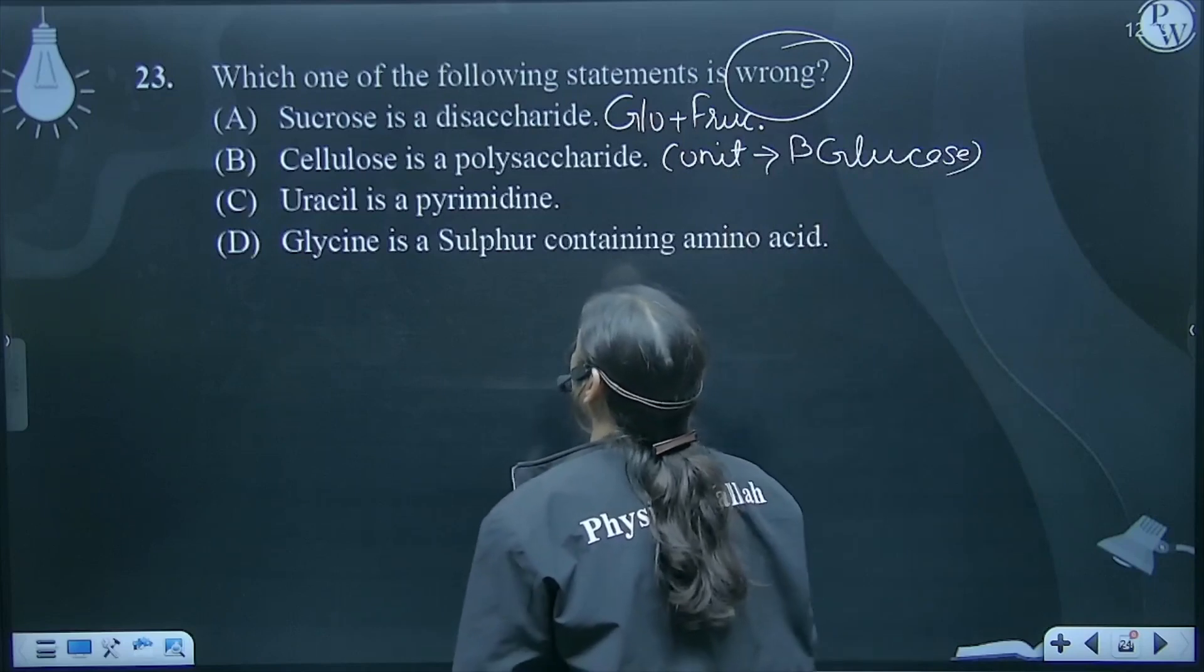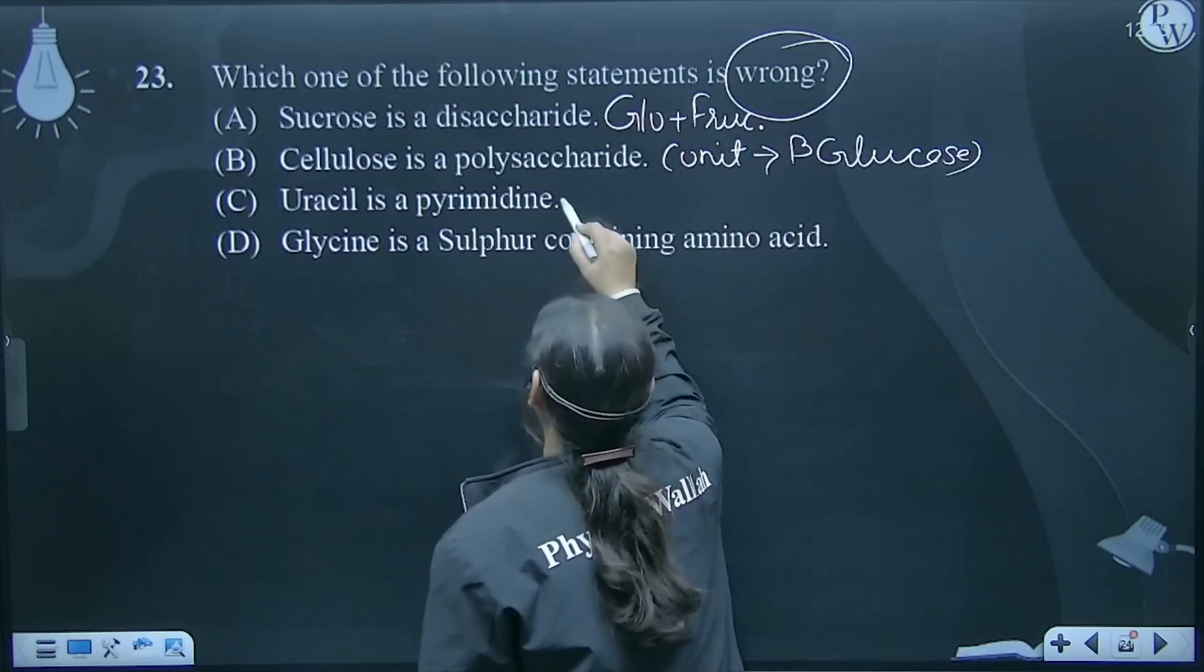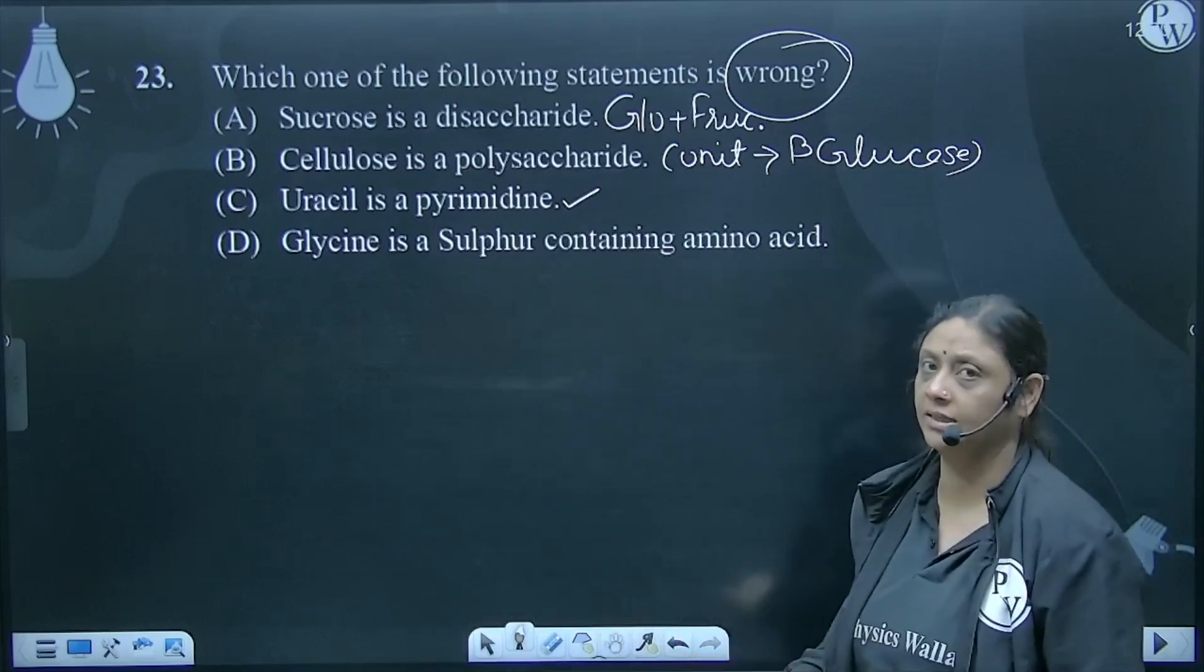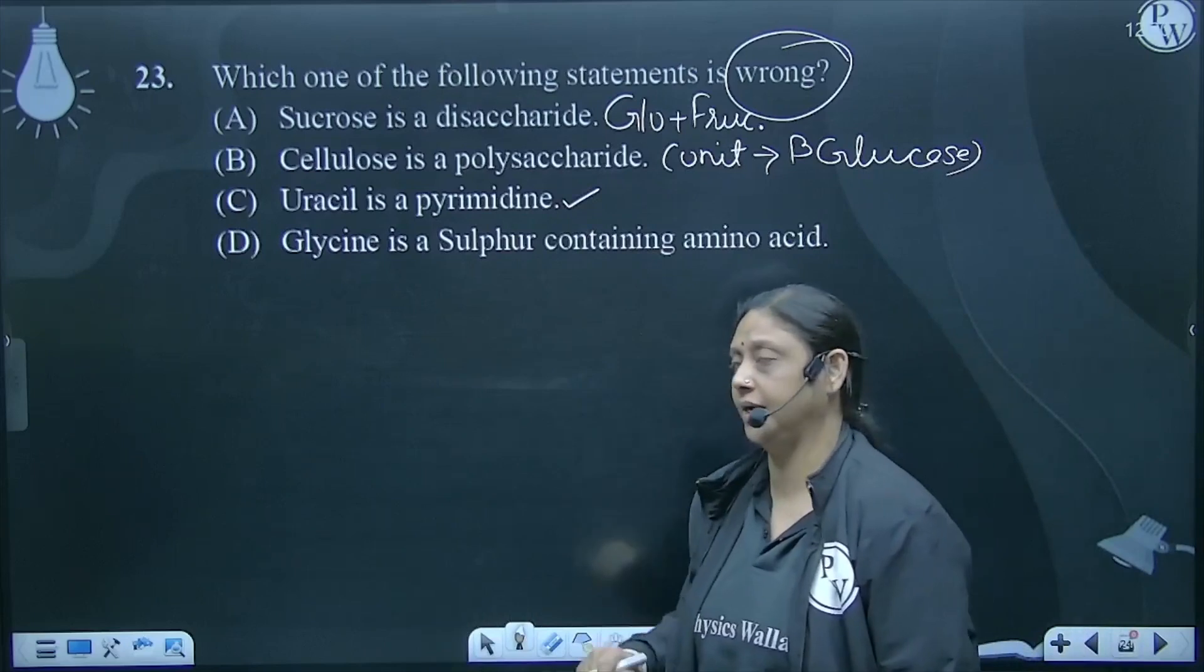Next, uracil is a pyrimidine? Yes, it is a pyrimidine, no doubt. Purines are adenine and guanine, while pyrimidines are thymine, uracil, and cytosine. All are pyrimidines.